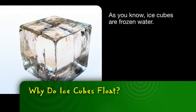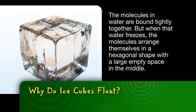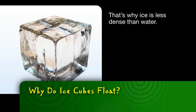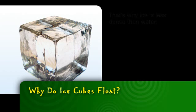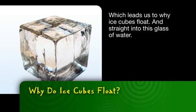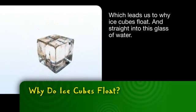As you know, ice cubes are frozen water. The molecules in water are bound tightly together. But when that water freezes, the molecules arrange themselves in a hexagonal shape, with a large empty space in the middle. That's why ice is less dense than water, which leads us to why ice cubes float — and straight into this glass of water.